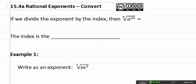15.4a rational exponents convert. Remember, we were always dividing the exponent by the index. And if we divide the exponent by the index, we would get a to the m divided by n. This means that the index is actually the denominator.